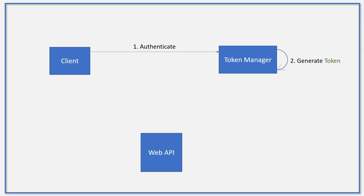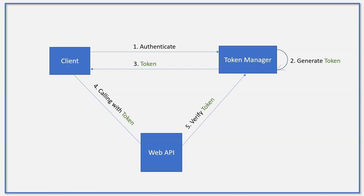After generating a token, the token manager returns the token back to the client. Then for every subsequent WebAPI call, the client will need to pass the token to the WebAPI. The WebAPI will verify the token with the token manager, which returns a verification result. If verification is successful, the WebAPI returns the information requested by the client.